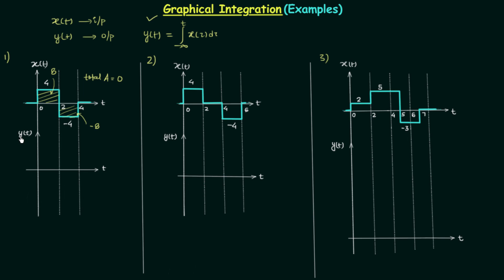Now we will plot the waveform of signal yt. Starting from minus infinity and increasing t slowly: at t equals zero, since signal xt is zero from minus infinity to zero, yt is also zero. We draw that portion of the waveform. Then increasing t to two, the area of xt from zero to two is eight, so when t equals two, signal yt equals eight.